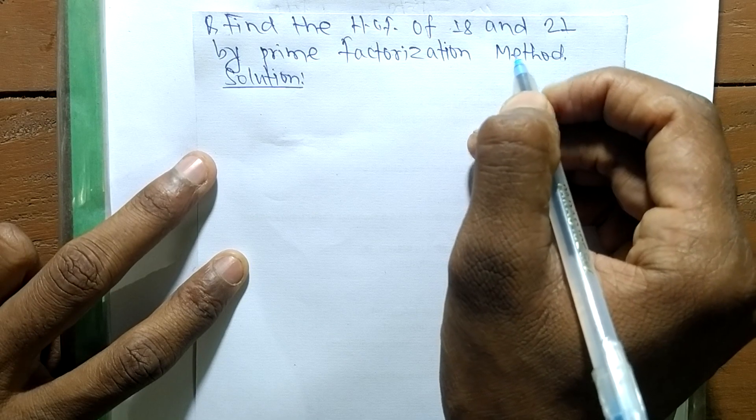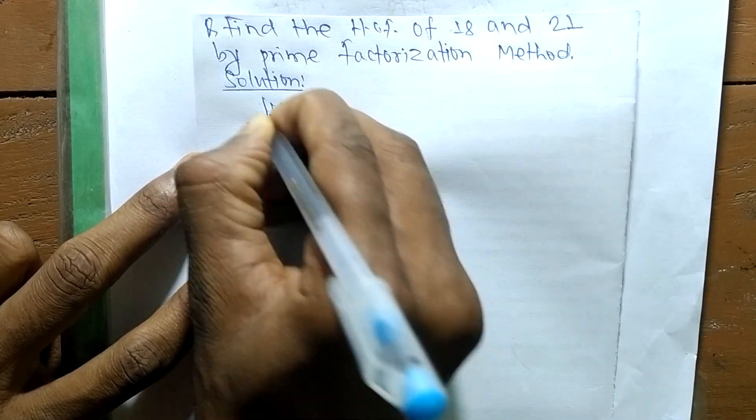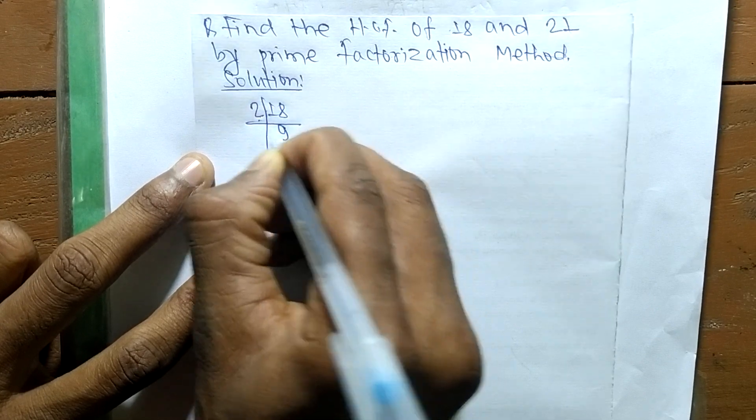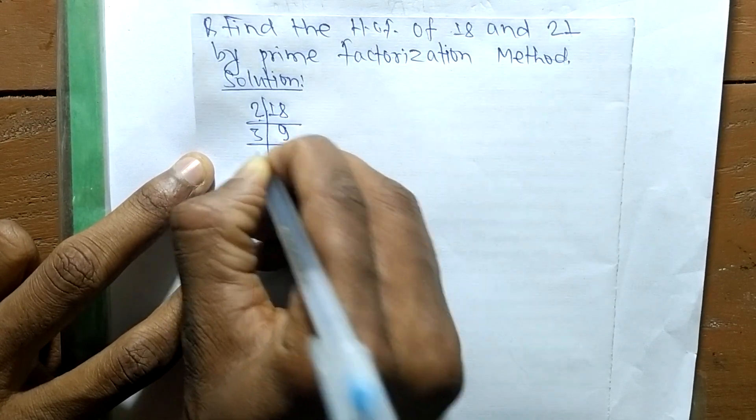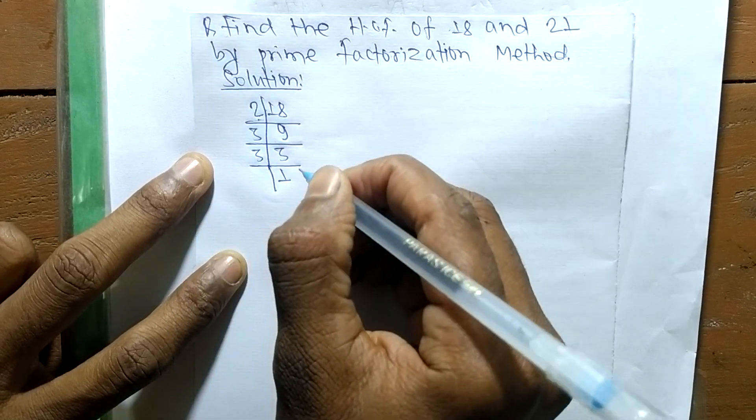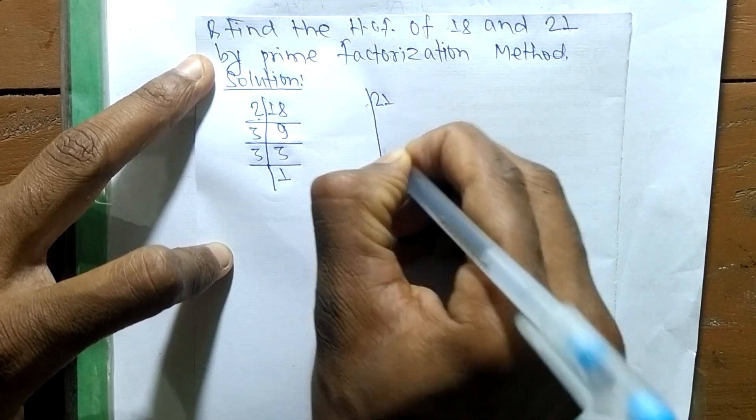First, we find out the prime factors of 18. So it is 2 times 9 means 18, 3 times 3 means 9, and 3 times 1 means 3. In the same way, the prime factors of 21 are...